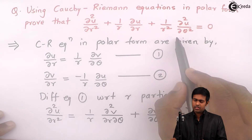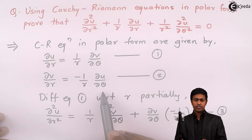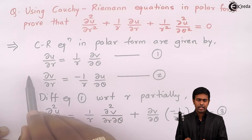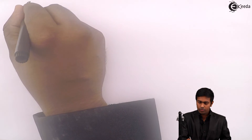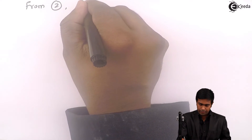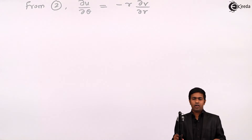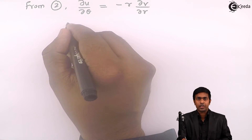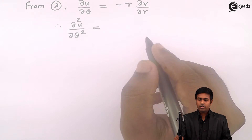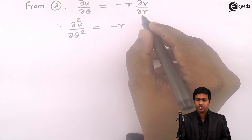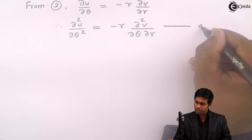Now to get the last term, I will rearrange equation number 2 to find ∂u/∂θ first. From equation 2, ∂u/∂θ = -r(∂v/∂r). Now differentiating this with respect to θ, we get ∂²u/∂θ² = -r(∂²v/∂θ∂r), since -r is constant with respect to θ. Let us call this equation number 4.